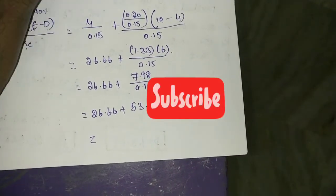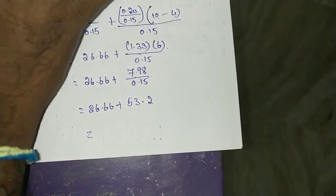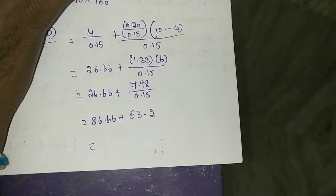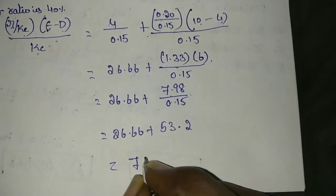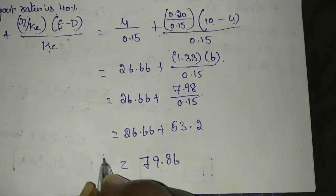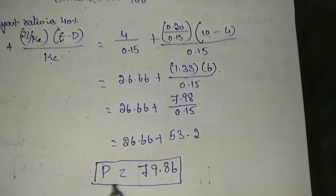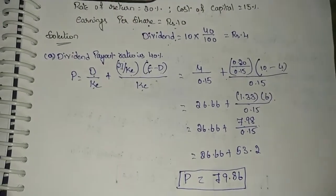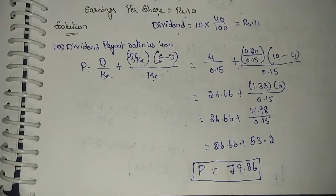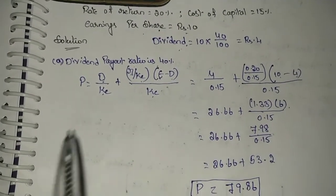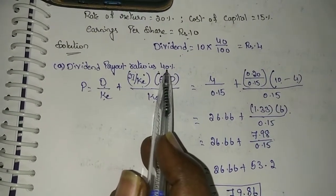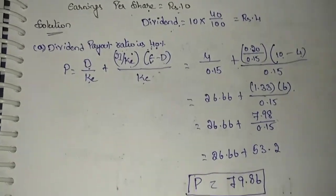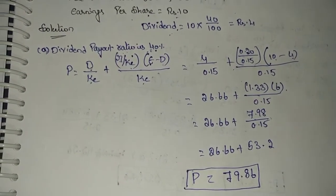So 26.66 plus 53.2 gives 79.86 as the value of equity shares when the dividend payout ratio is 40%. This is how we calculate the price of shares using the Walter's model. We have now seen the calculation of value when the dividend payout ratio is 40%.